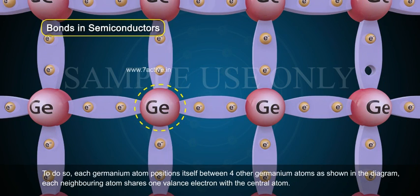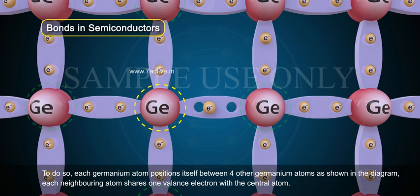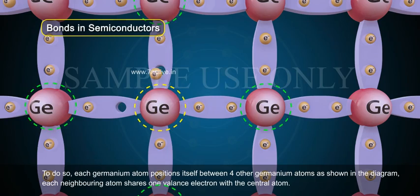To do so, each germanium atom positions itself between 4 other germanium atoms as shown in the diagram.